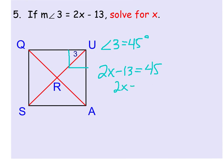So if I add 13 to both sides, I get 2x equals 58. And divide both sides by 2, we get x equals 26.